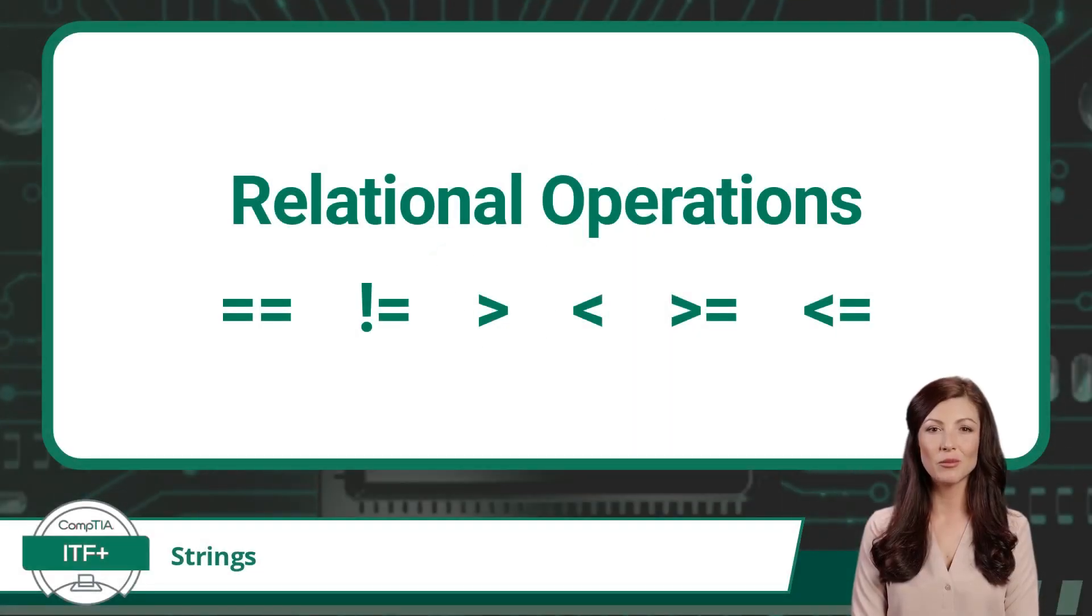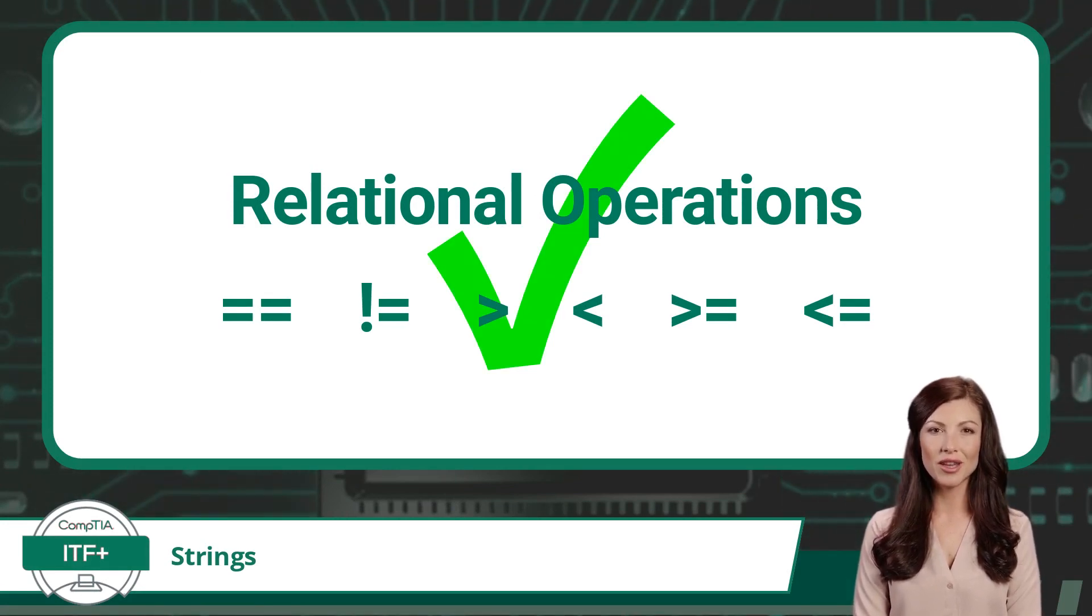The string data type also supports relational operations. Strings are compared one character at a time. When different characters are found, then their binary code point values are compared. The character with the lower code point value is considered to be smaller.